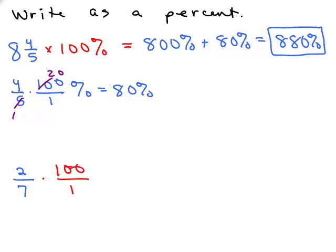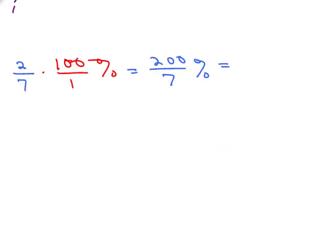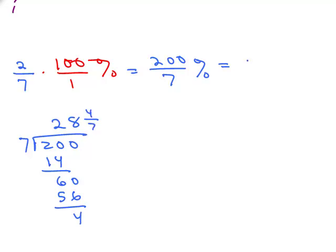How about 2 sevenths? So, it's a fraction, so let's multiply it by 100 percent. And nothing cancels this time. It's life. Go ahead and just multiply the numerators together, multiply the denominators together, and then just do 200 divided by 7. It's not going to go evenly, so I'm going to write 200 divided by 7 as a mixed number. So, it's 28, with a remainder of 4, so that's 28 and 4 sevenths. So, this would be 28 and 4 sevenths percent.